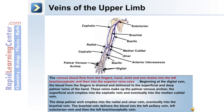The blood flow is as follows: beginning at the digital vein, the blood from the fingers is drained and delivered to the superficial and deep palmar veins of the hand, which make up the palmar venous arches. The superficial arch empties into the cephalic vein and eventually into the median cubital vein. The deep palmar arch empties into the radial and ulnar veins, which eventually empty into the brachial vein. The brachial vein delivers the blood into the left axillary vein, left subclavian vein, and then the left brachiocephalic vein.